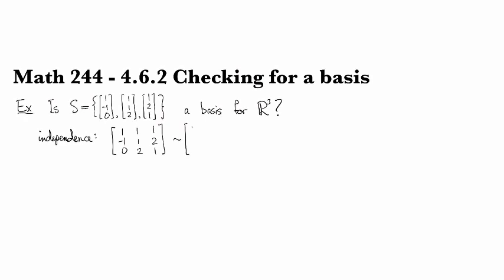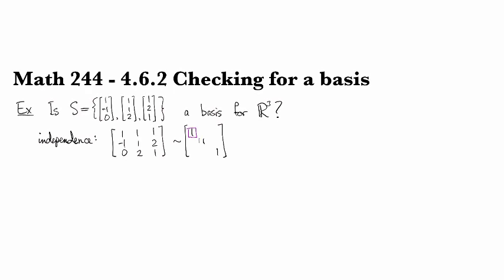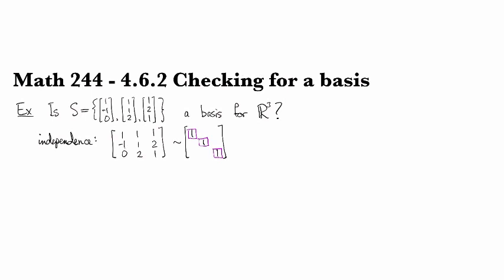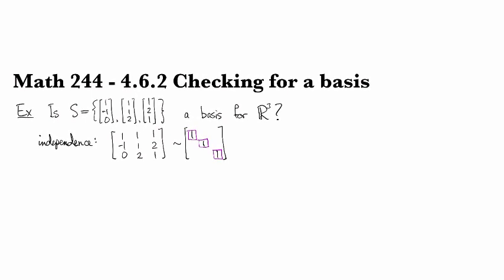And it turns out that this row reduces to the identity. So when I see that and I see that I have a pivot in each column, then I know that this is, in fact, independent.